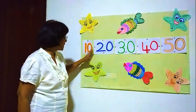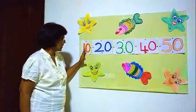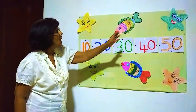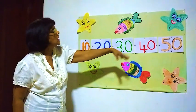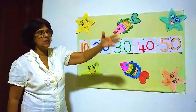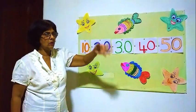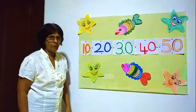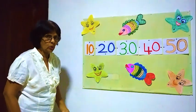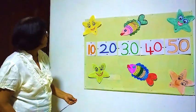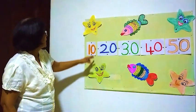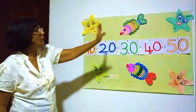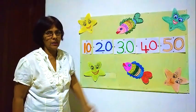All 10s here. All 10s here. After 50, there are 60, 70, 80. When we finish the other numbers, we can do it. Now, for the moment, we are learning 10 to 50.